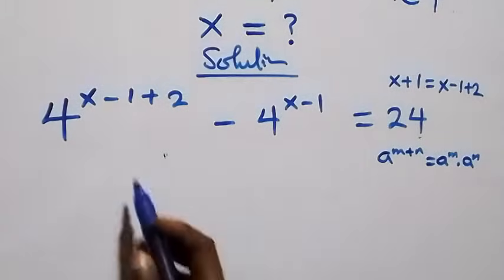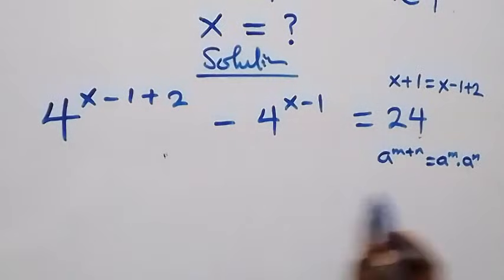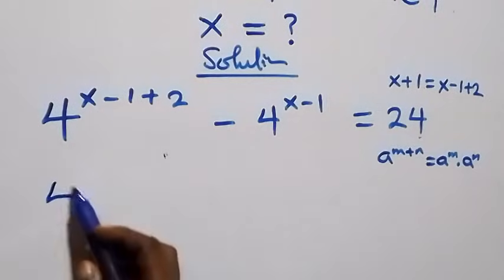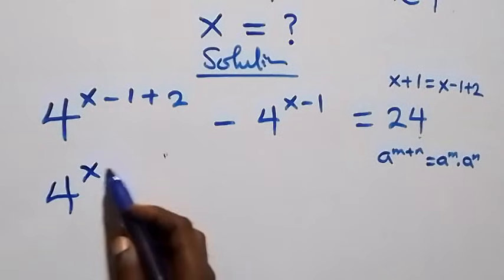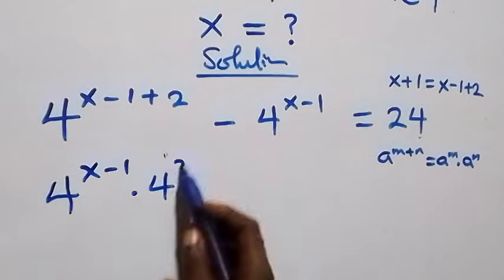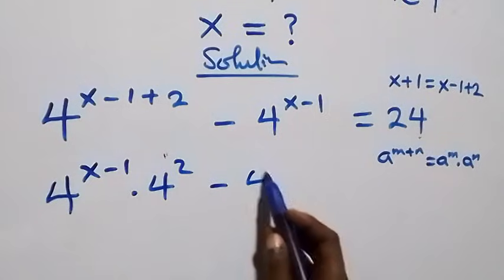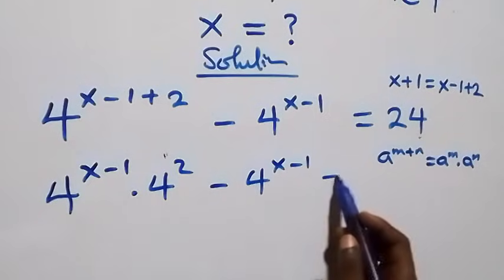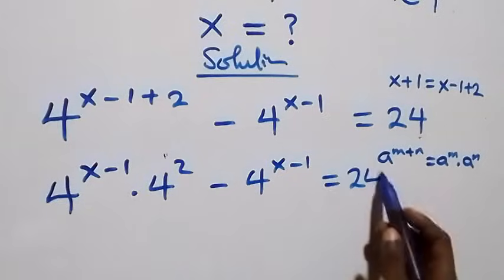That is, here we treat m as x minus 1 and n as 2. Then we have 4 raised to power x minus 1, times 4 raised to power 2, then minus 4 raised to power x minus 1, equals to 24 from here.